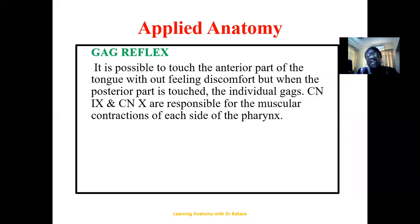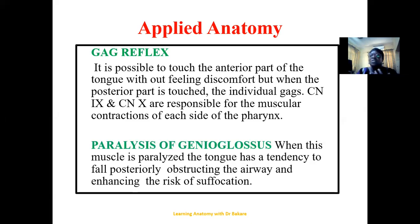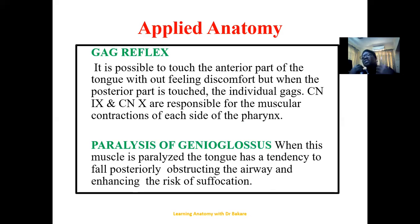The gag reflex is a contraction at the oropharyngeal region coordinated by the glossopharyngeal nerve and the vagus nerve. We could also have paralysis of the tongue — since the hypoglossal nerve is responsible for motor function, if it is damaged, it results in paralysis of the tongue meaning the tongue cannot be properly held in place. It drops posteriorly, tends to block the airway, and can increase the risk of suffocation.